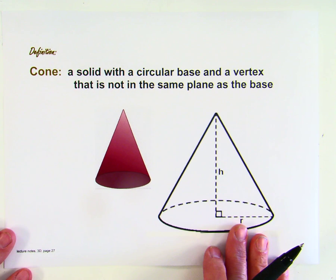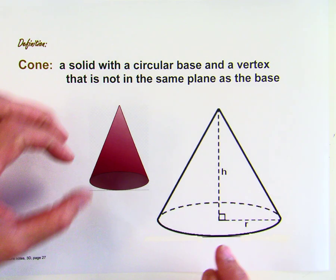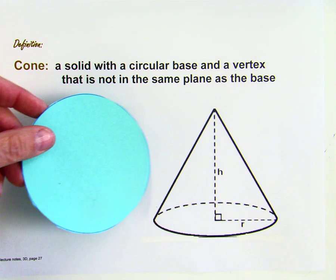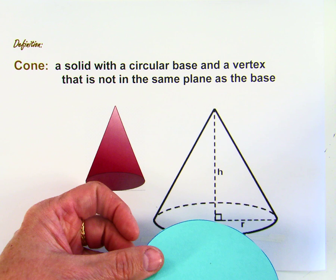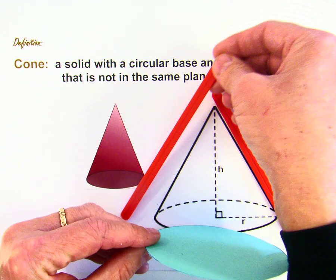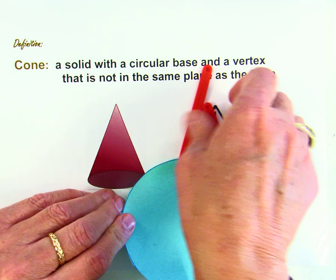Okay, next is a cone. A cone is a solid with a circular base and a vertex that's not in the same plane as the base. So that means you'll have a circle and a dot and you'll form a point outside. You'll have a circle and you'll bring lines up in a curved plane to make a vertex to make your cone.